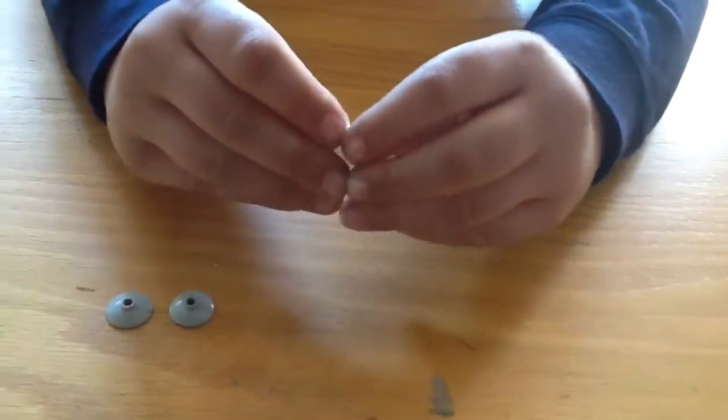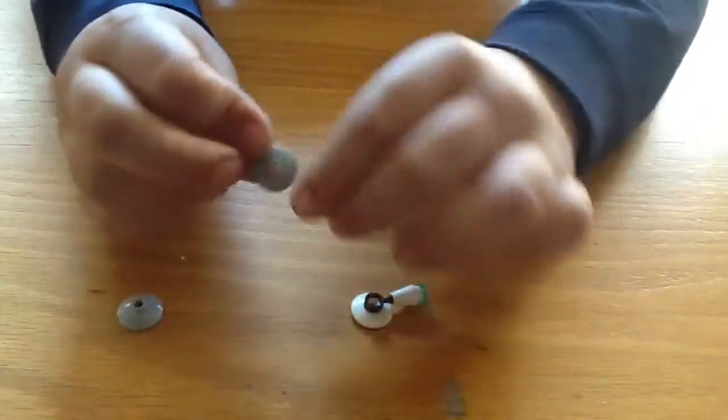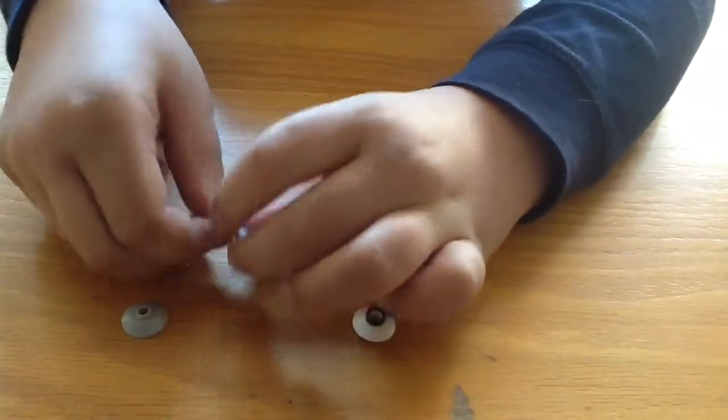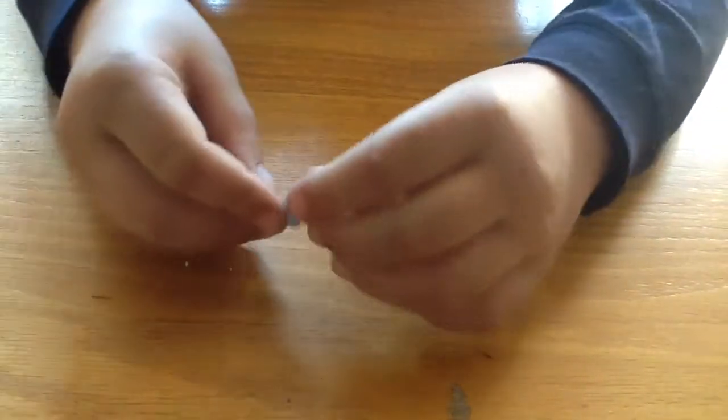Then on the bottom, you put the dark head dome. Then another one of those disc things on there, and another one there.